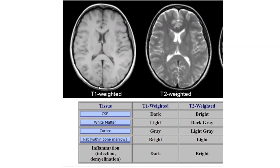In T1, here we can see in this actual image that the CSF appears dark — all the CSF appearing here is dark, as you can see by the cursor. In terms of the T2 image, the most important thing is that the CSF appears bright. The other important thing to look at is the white matter: white matter is light in color in T1-weighted images and dark gray in T2 images. This is the axial view.